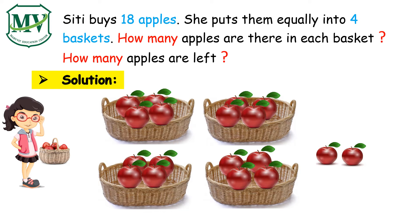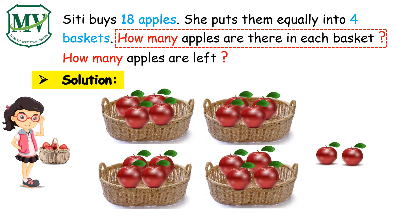But wait, we still have two remaining apples. Can we put them into the four baskets? No, we can't. The two remaining apples will now be our remainder. Let us answer the questions in this problem. The first question is: how many apples are there in each basket? We have four apples in each basket.